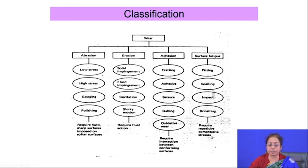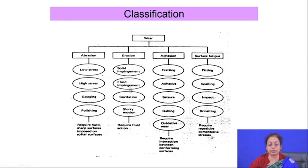Each subcategory of wear has completely different characteristics, and from those characteristics you can distinguish between each type of wear. The reason behind each category is different — for example, the reason behind low stress abrasion is different from high stress abrasion. However, the one common point for all abrasive subcategories is hardness difference between the mating surface and the substrate.